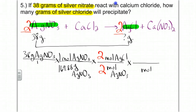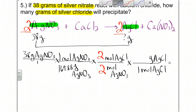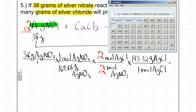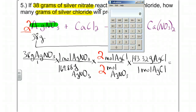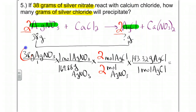Bring down moles of silver chloride — one mole — and get the grams from the periodic table: 143.32. For the final answer: 38 divided by 169.88 times 2 divided by 2 (which cancels out) times 143.32 gives 32.05. Since we only need 2 sig figs, our answer is 32 grams of silver chloride.